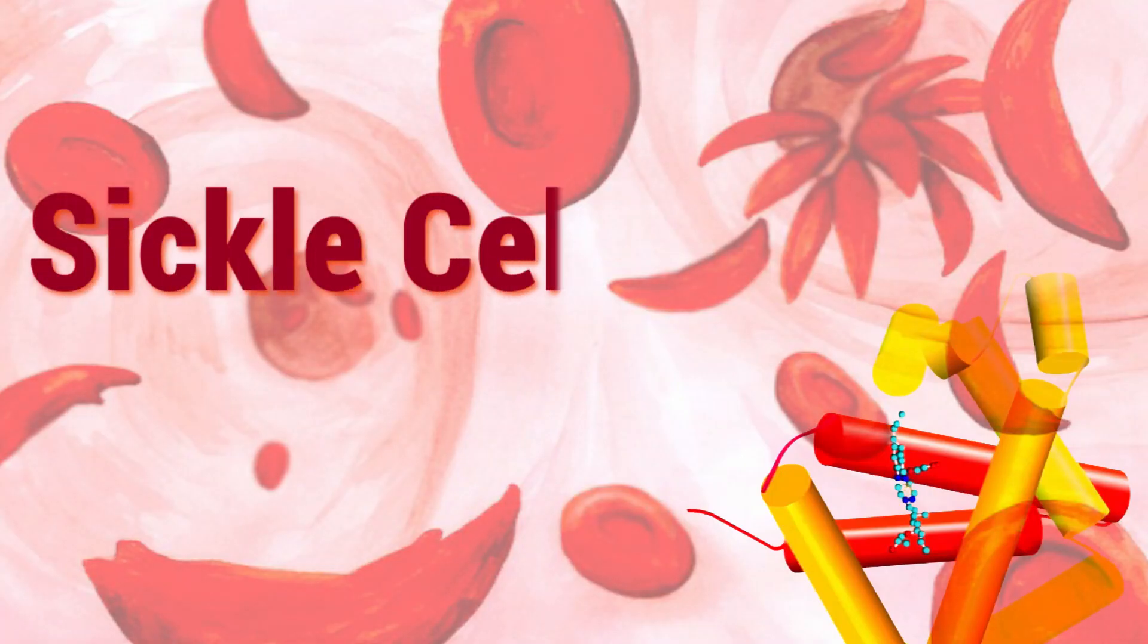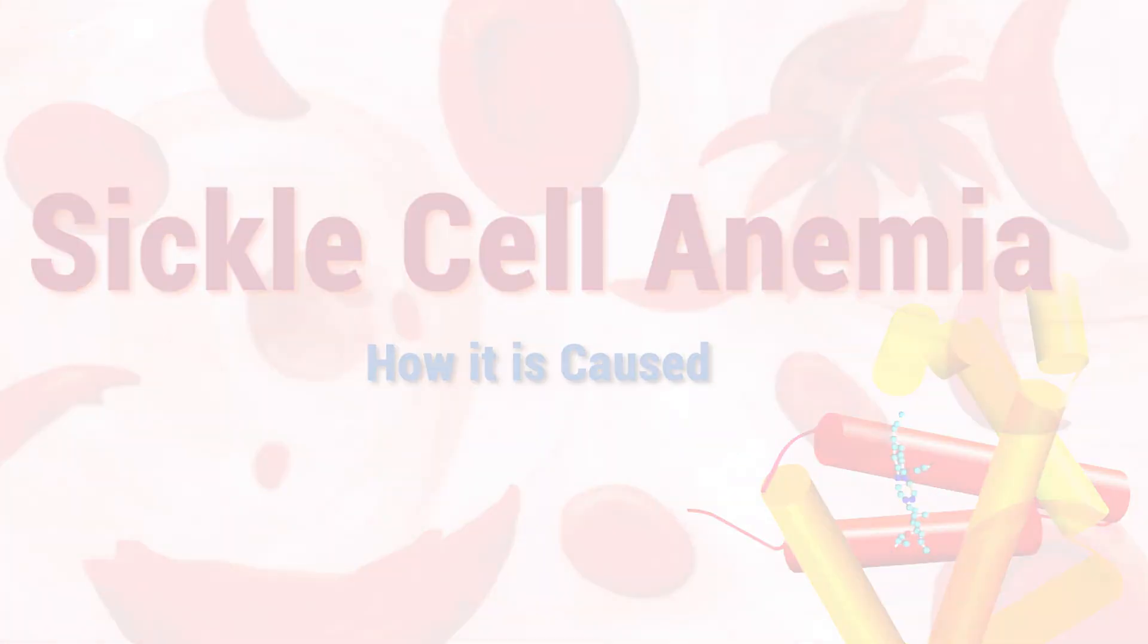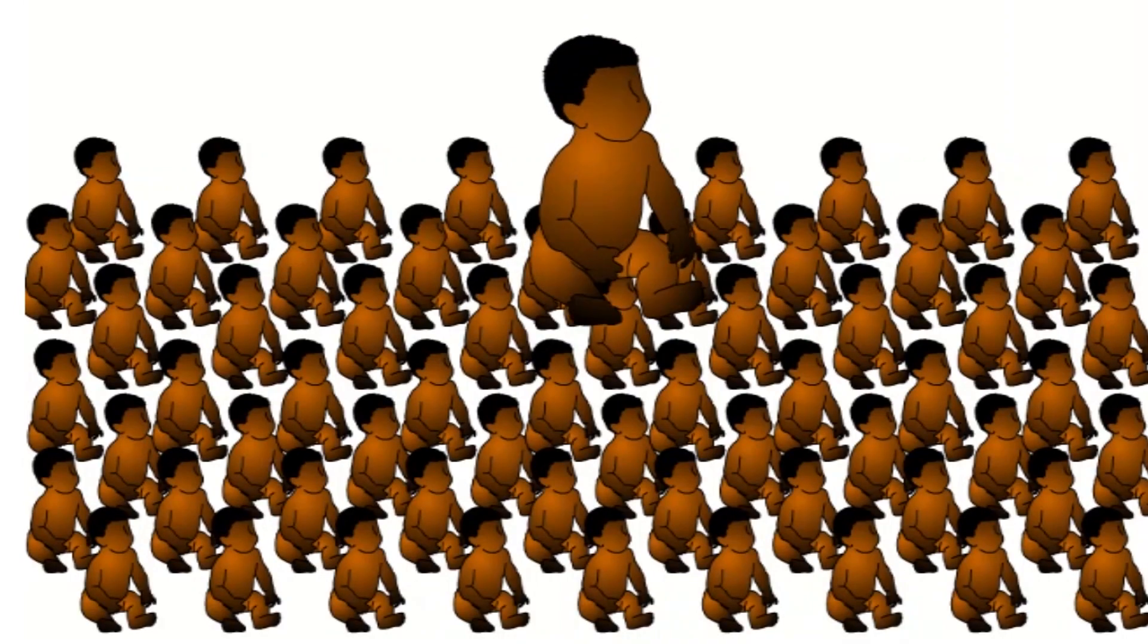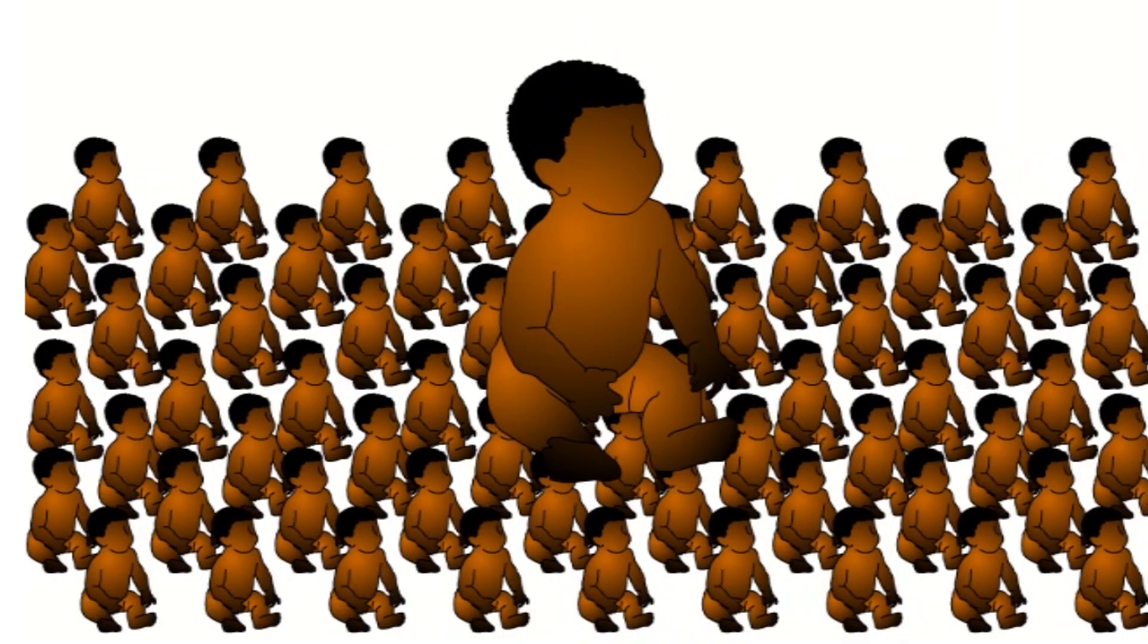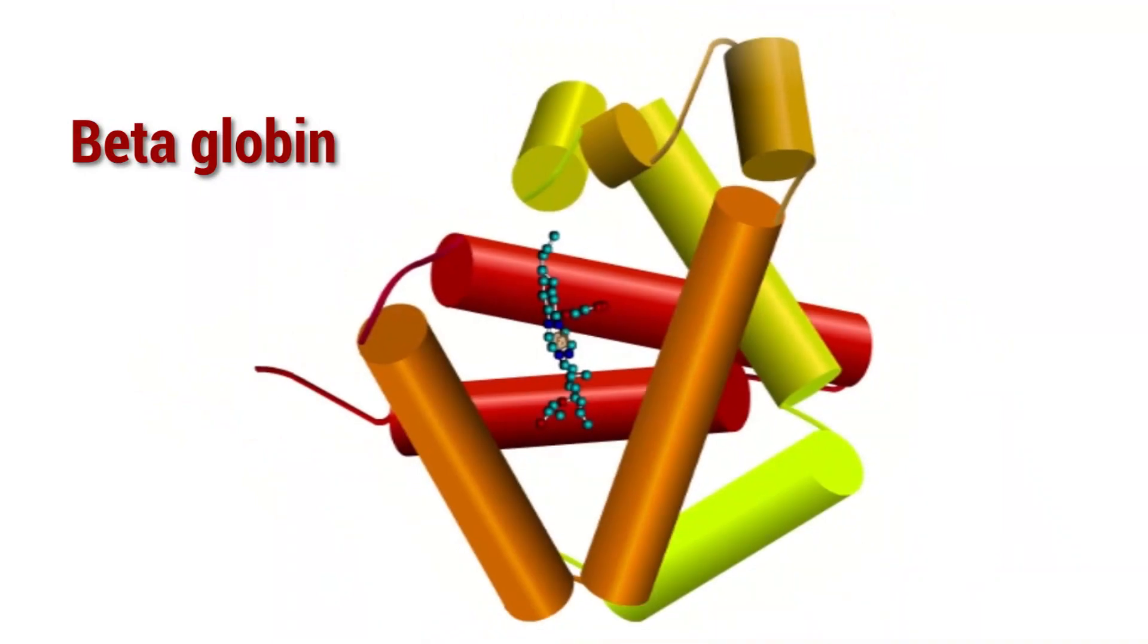Sickle cell disease is a group of disorders that affects hemoglobin, the molecule which delivers oxygen throughout the body. It is one of the most common genetic disorders in the United States, affecting about one in every 375 African-American children.